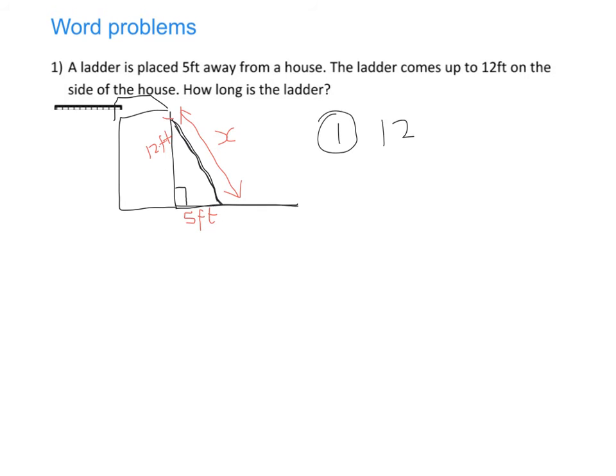Step one is we're going to square both the numbers. So 12 multiplied by 12 gives me 144, and 5 times 5 gives me 25. Step two then is important because we need to make sure we're doing this the correct way around. If I'm trying to work out the hypotenuse, I'm going to add them together. So we're going to do 144 plus 25 and that's going to give me 169.